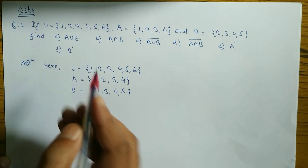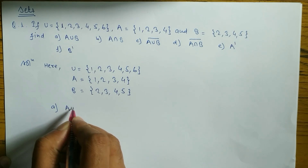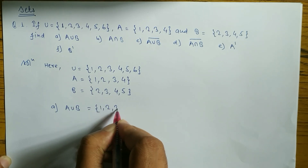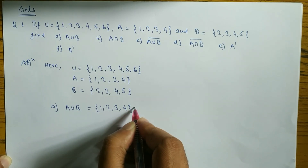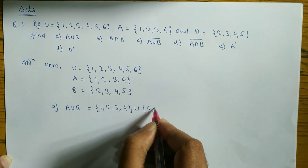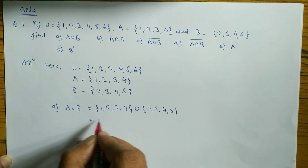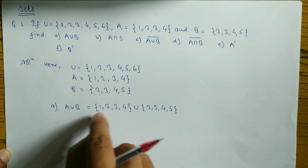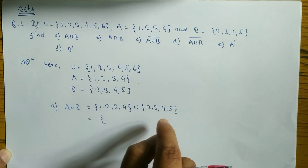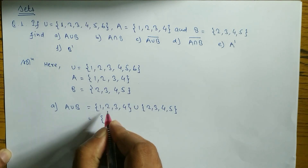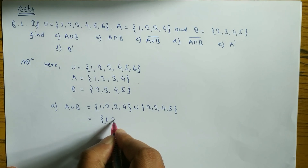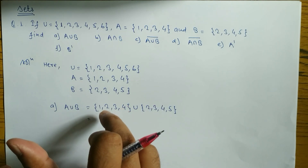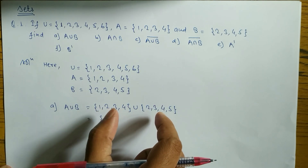Now in part (a) we have to find out A union B. Look properly at how to find out A union B. To find out A union B, what are the elements of A? We write {1, 2, 3, 4} union, and what are the elements of B? {2, 3, 4, 5}. Now A union B — we have to take all the elements which belong to A as well as B, but no need to repeat.